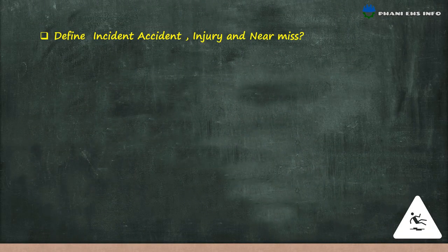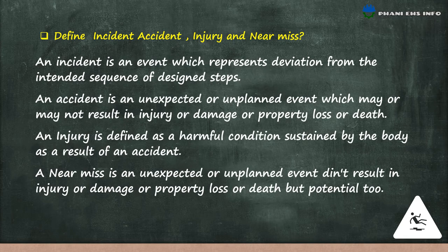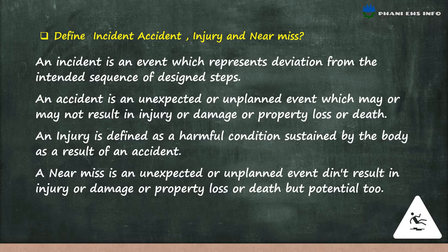Define incident, accident, injury and near miss. An accident is an unexpected or unplanned event which may or may not result in injury, damage, property loss or death. An injury is defined as a harmful condition sustained by a body as a result of an accident. A near miss is an unexpected or unplanned event that did not result in injury, damage, property loss or death, but had the potential to.